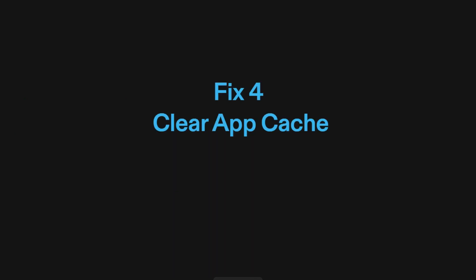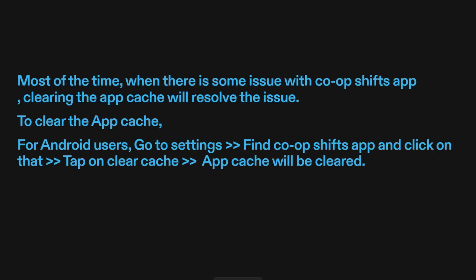Fix four: clear app cache. Most of the time, when there is some issue with Co-OpShift's app, clearing the app cache will resolve the issue. To clear the app cache for Android users, go to Settings, find Co-OpShift's app and click on it, then tap on Clear Cache. The app cache will be cleared.